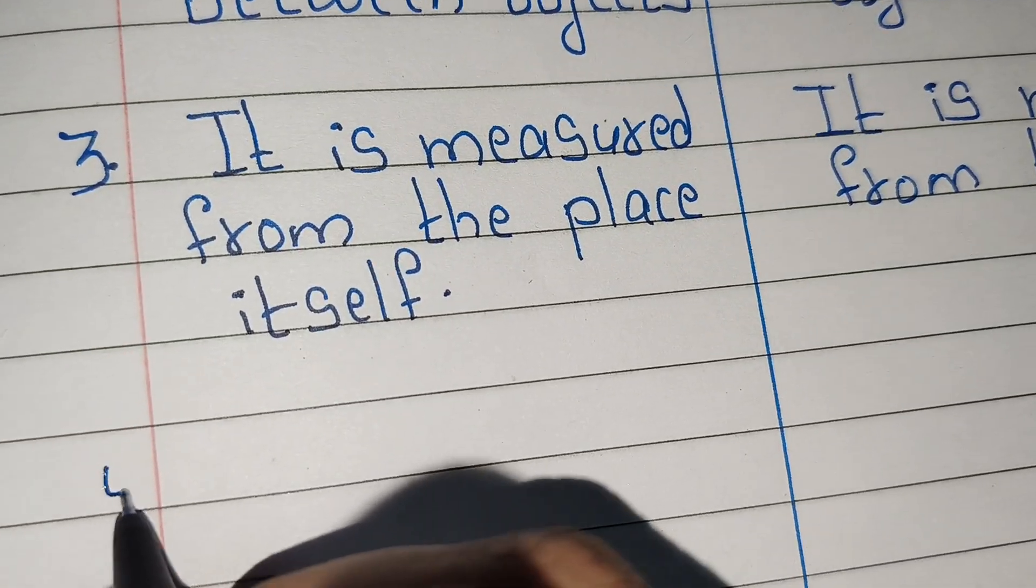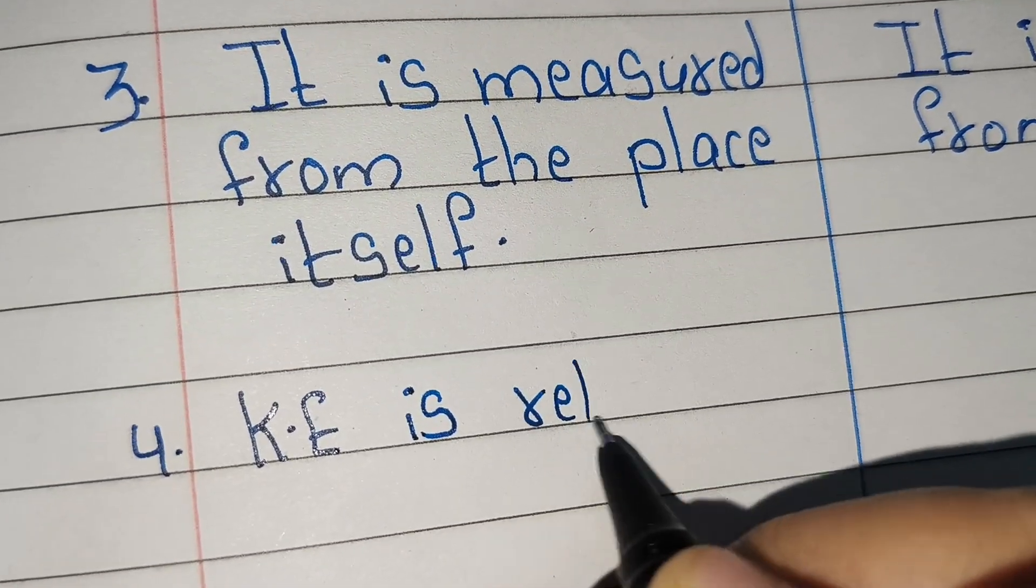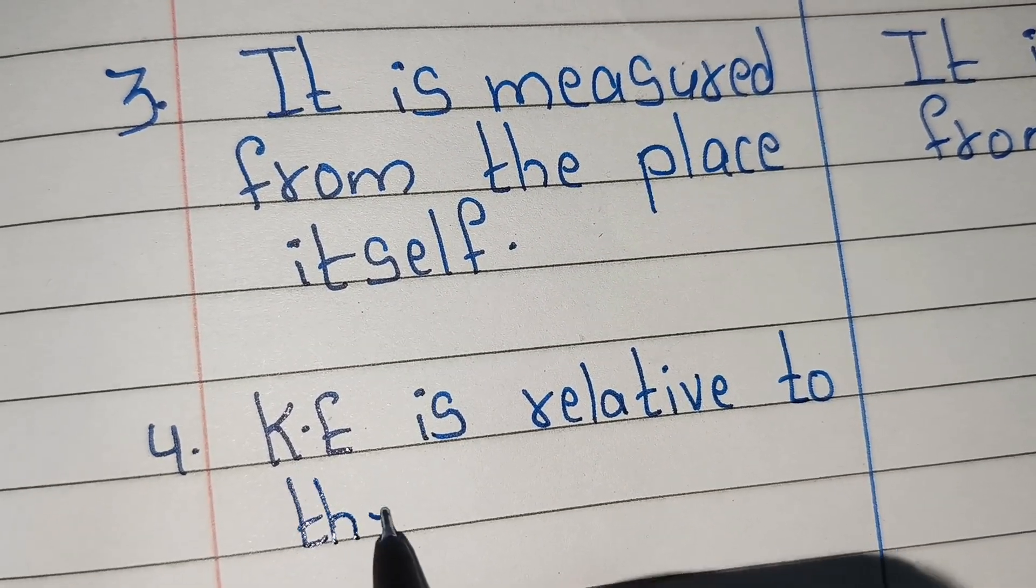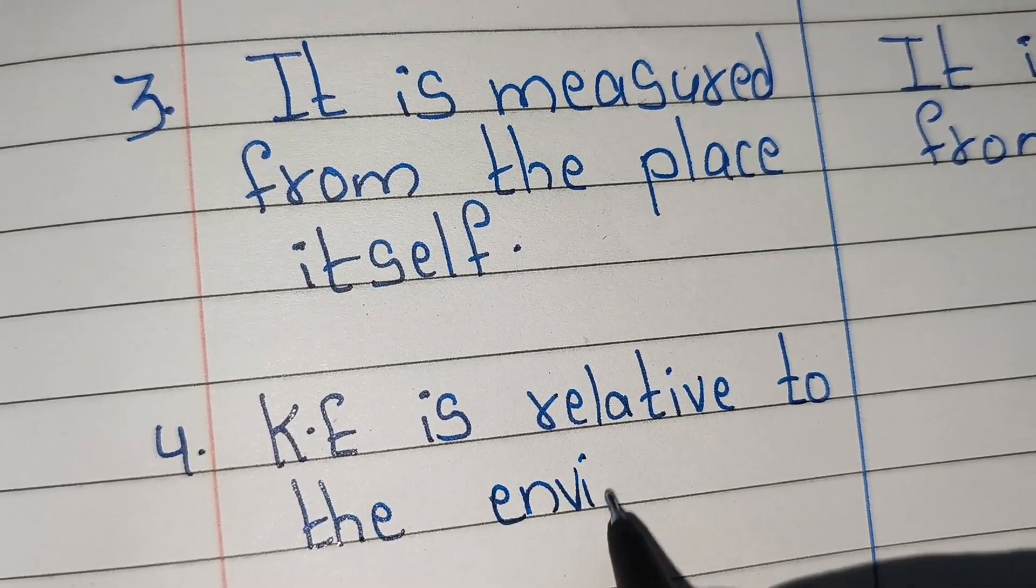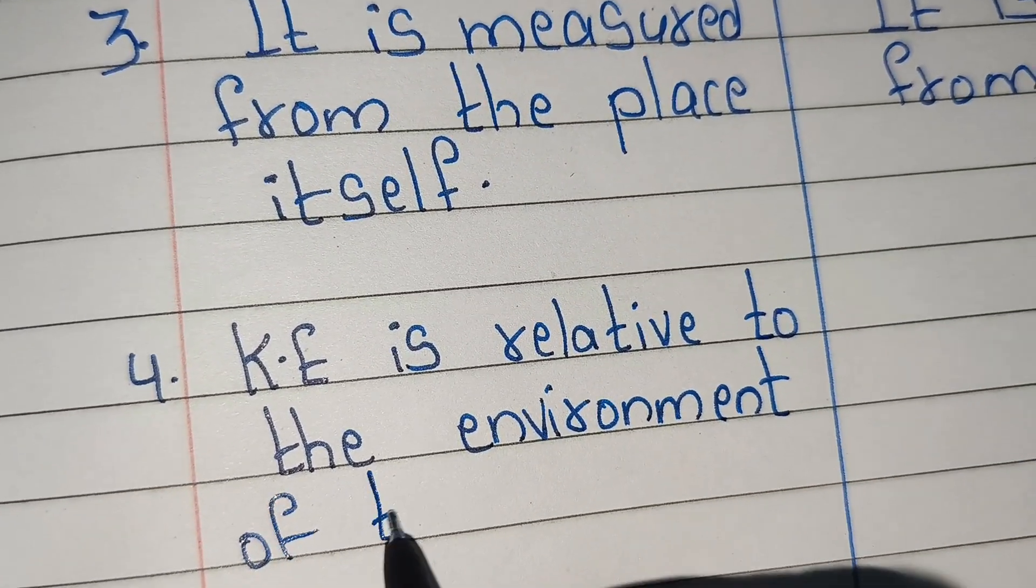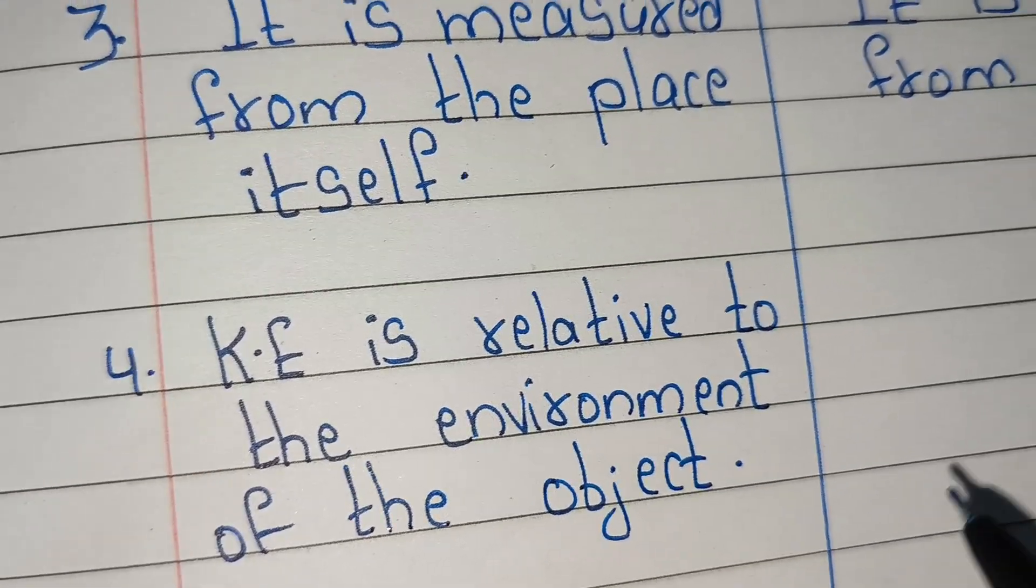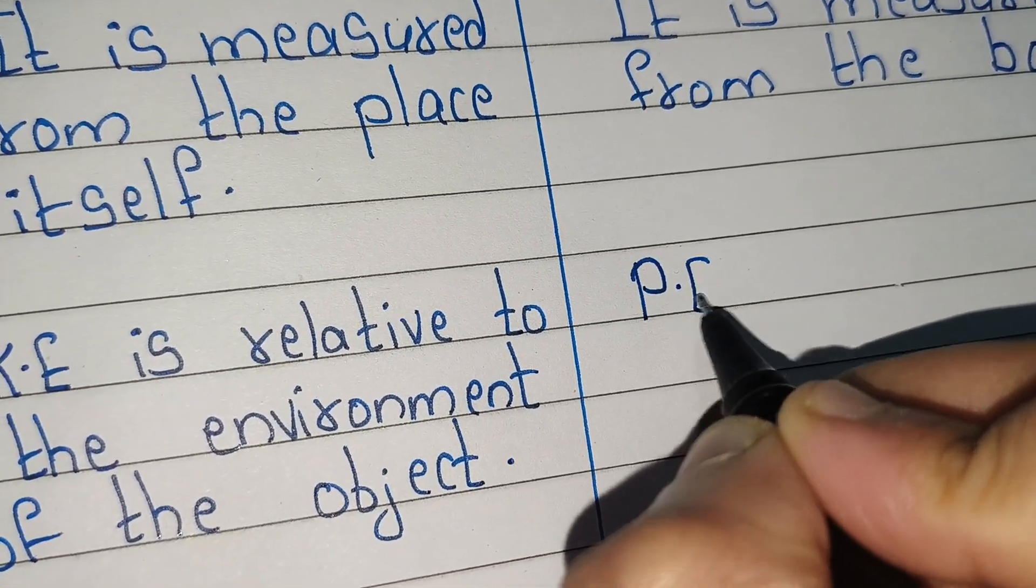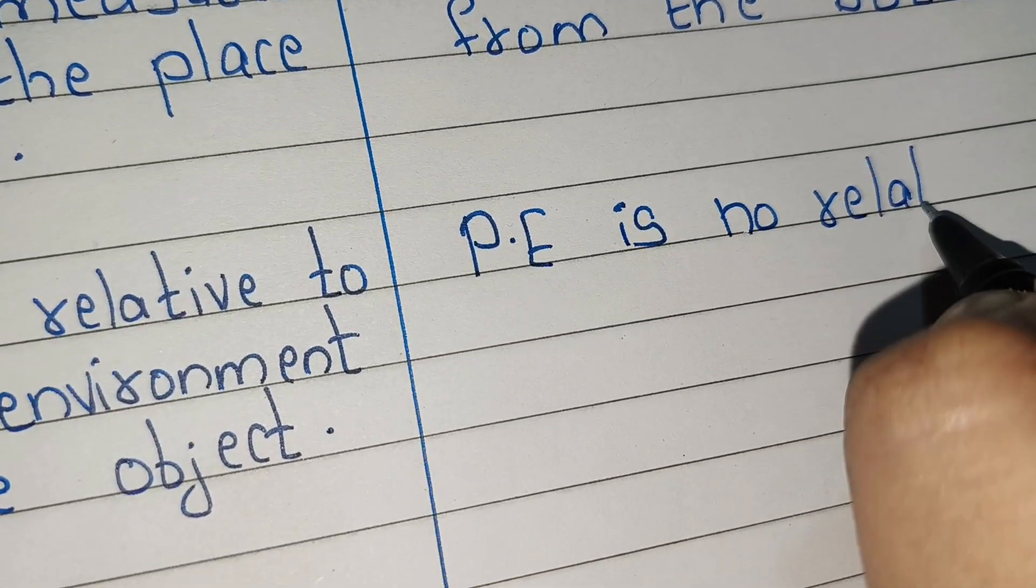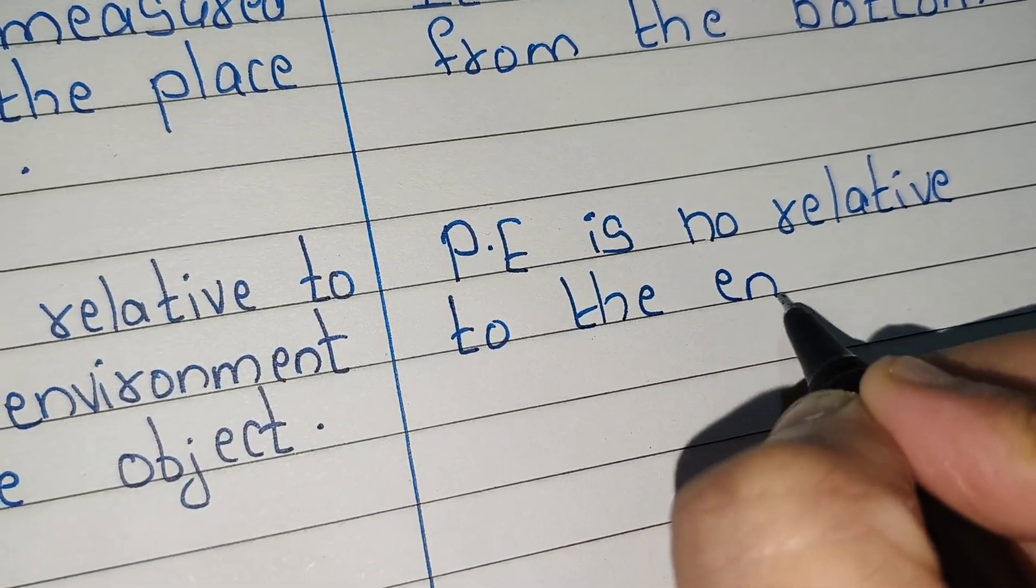Fourth point: kinetic energy is relative to the environment of the object. Potential energy is not relative to the environment of the objects.